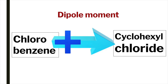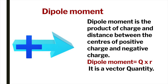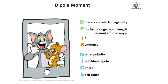Dipole moment is the product of the magnitude of the charge and the distance between the centers of positive and negative charge. This is a vector quantity — it depends both on magnitude and direction of the bond dipole. To find the dipole moment, let us see a beautiful mnemonic: DP IS NICE.